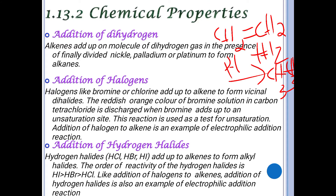Addition of halogens: when halogens like bromine or chlorine add to an alkene, they form vicinal dihalides. The reddish-orange color of bromine solution in carbon tetrachloride is discharged when bromine adds to an unsaturation site. This is used as a test for unsaturation and is an electrophilic addition reaction.